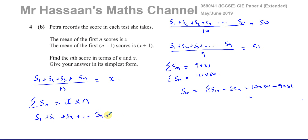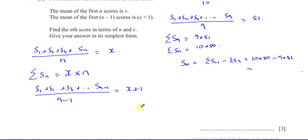We know that score 1 plus score 2 plus score 3, all the way to score n minus 1, divided by n minus 1, is going to give us x plus 1 as the mean. So the sum of the first n minus 1 scores is equal to n minus 1 multiplied by x plus 1.